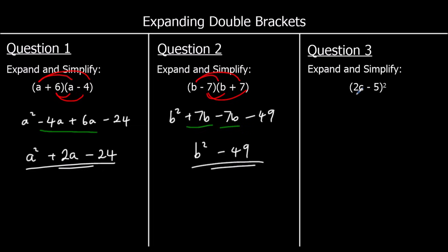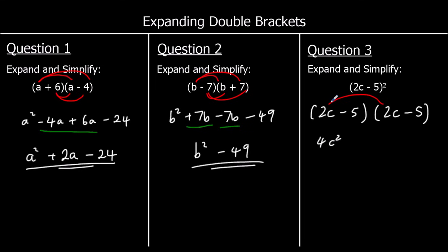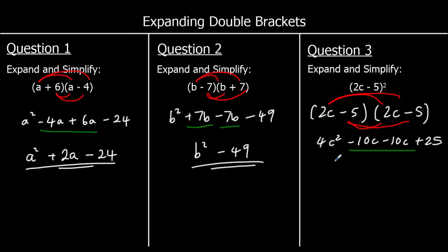The last one: (2c−5) squared means (2c−5) times (2c−5). 2c times 2c is 4c squared. 2c times negative five is negative 10c. Again 2c times negative five is negative 10c. And negative five times negative five is positive 25. Collecting like terms: 4c squared, negative 10 take away another 10 is negative 20c, plus 25 — so 4c squared minus 20c plus 25.